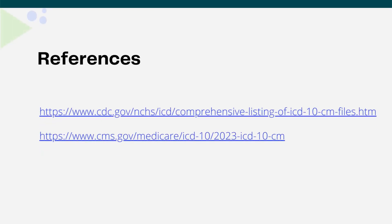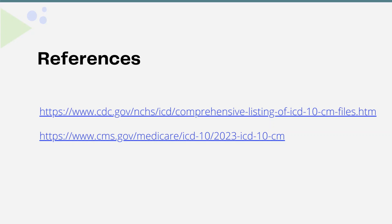The links for the comprehensive list of ICD-10-CM files for 2023 are provided here, where you can find the updated guidelines, the complete list of codes with descriptions, and other relevant data including the POA indicators that have been updated. Please refer to these links and review all the files to get all the resources you need for the latest ICD-10-CM updates.